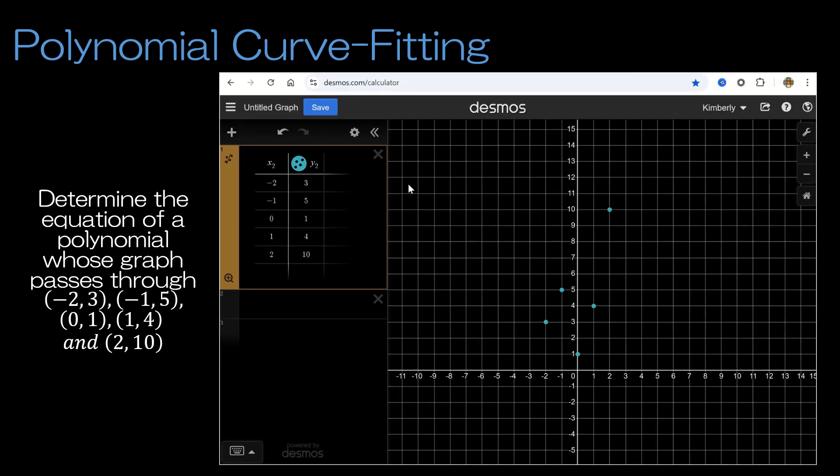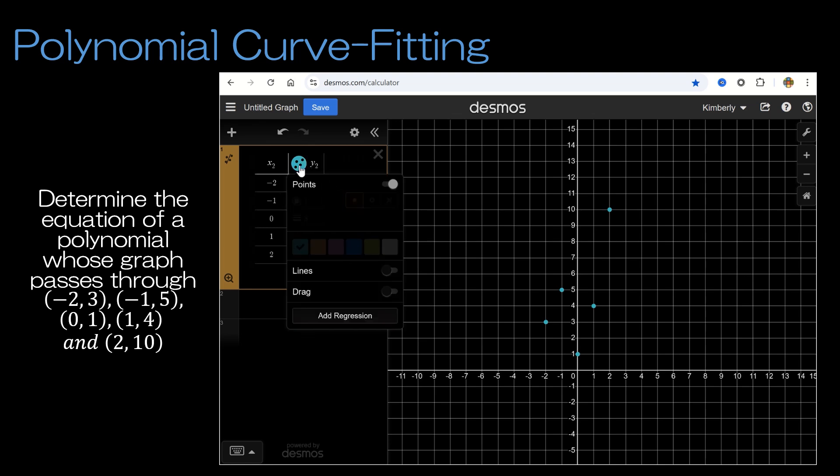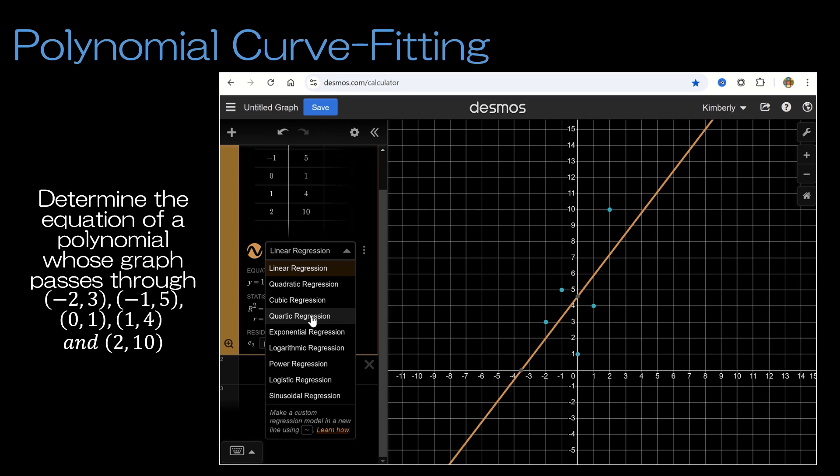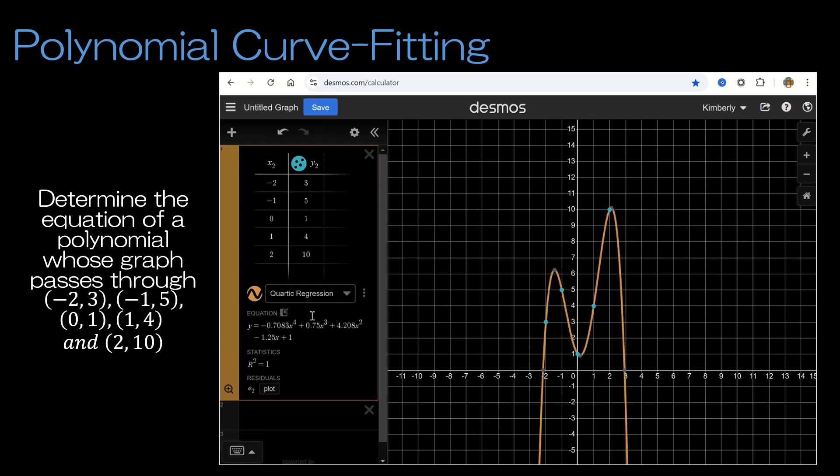Just as we did in our last video, we can use the capabilities of Desmos to find those coefficients. I've put in those 5 points. If I long click on the circle, I can click on Add Regression. This is quartic regression because it was to the 4th power, so clicking quartic regression gives me the solutions for my coefficients.